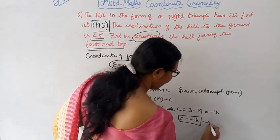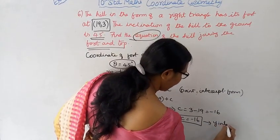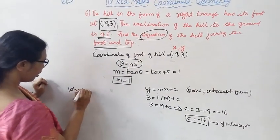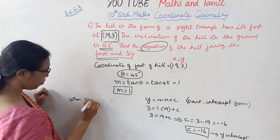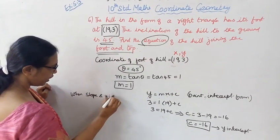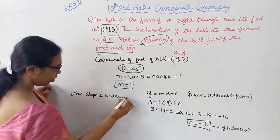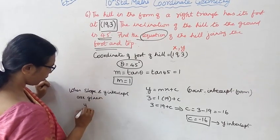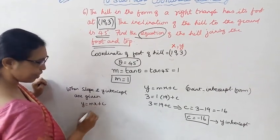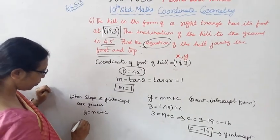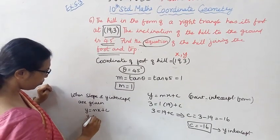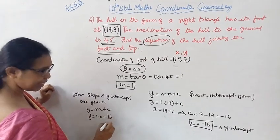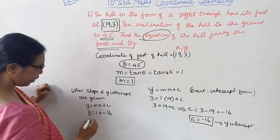C is equal to Y intercept. When slope and y intercept are given, Y equal to Mx plus C. M is 1, C is minus 16.